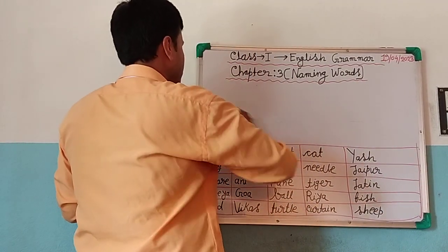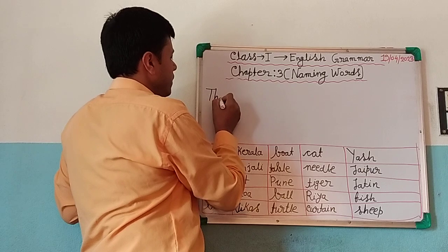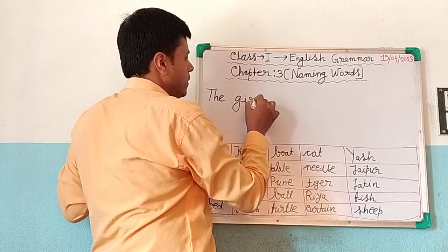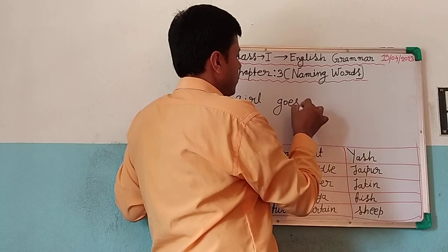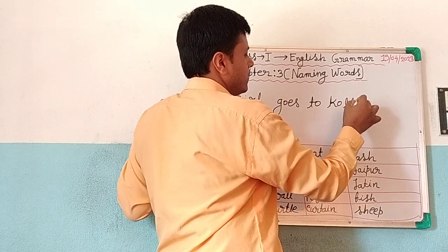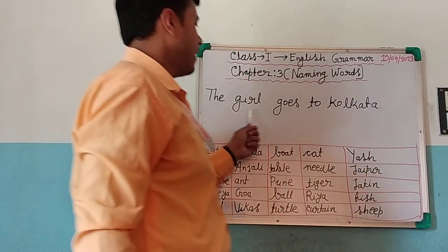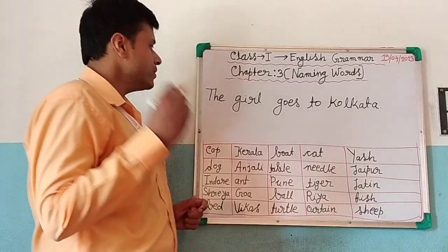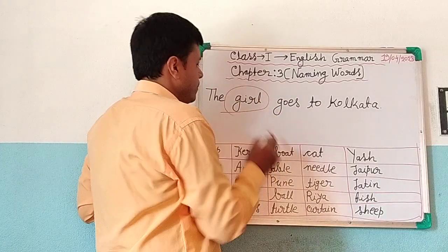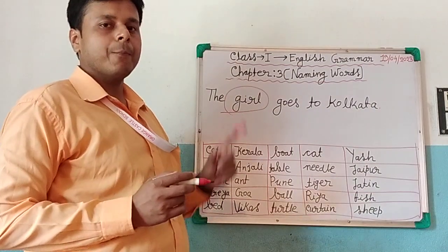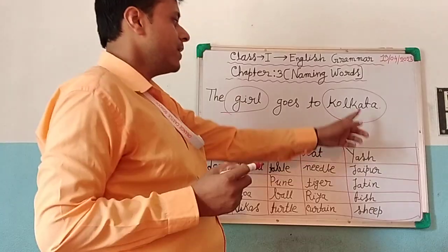Another example, so you will be clear. The girl goes to Kolkata. I have written: the girl goes to Kolkata. Now, the naming words here are girl — girl is the naming word because it refers to the name of a particular girl. And Kolkata — Kolkata is also a naming word. Why? Because it is the name of a place.